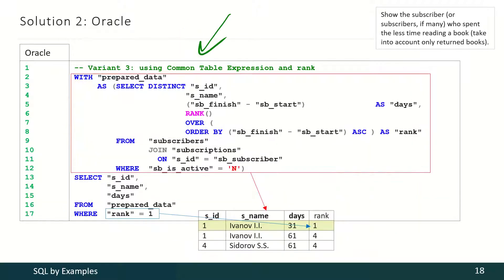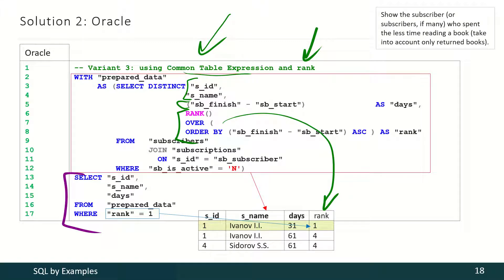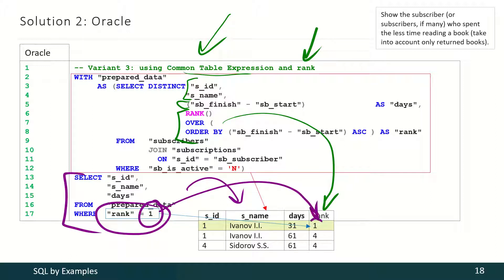Or we may use common table expressions with ranking. We produce information about subscribers and time periods, and rank those time periods by their lengths. Then we only have to select from this data the line or lines with the shortest period of time. And that is how we get our final result.